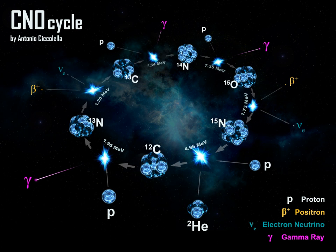The neutrinos escape from the star carrying away some energy. One nucleus goes on to become carbon, nitrogen, and oxygen isotopes through a number of transformations in an endless loop.